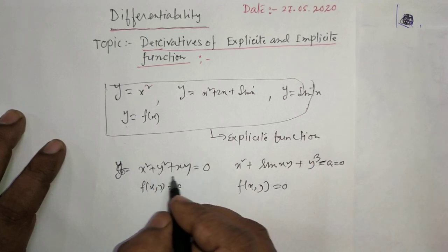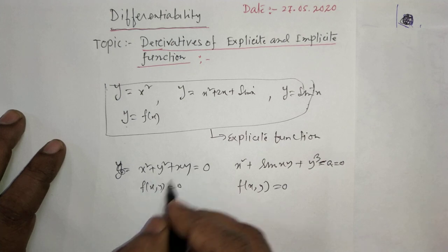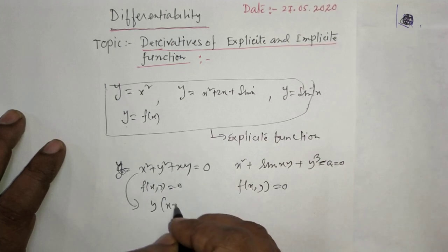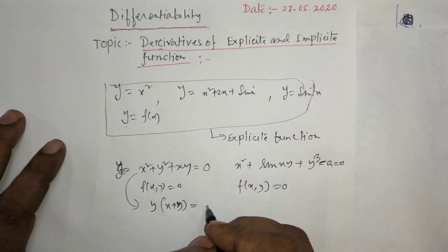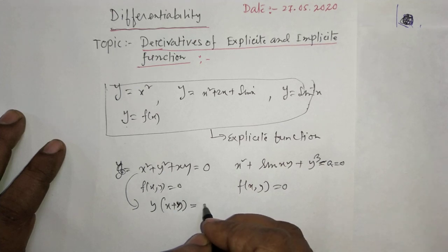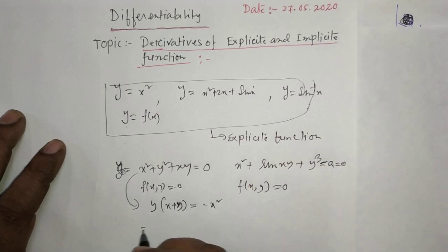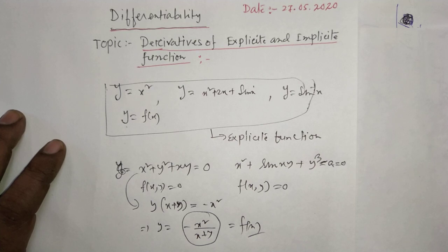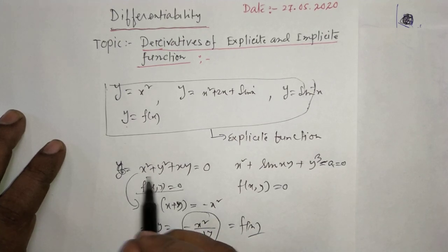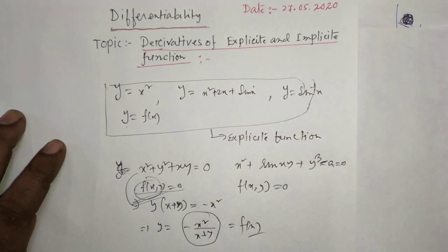If you try — say you take y common, you get y times (x + y) equals minus x squared, and then y equals minus x squared divided by (x + y). You cannot express this purely in terms of x. So when y cannot be expressed as a function of x alone, such a function f(x, y) is called an implicit function.